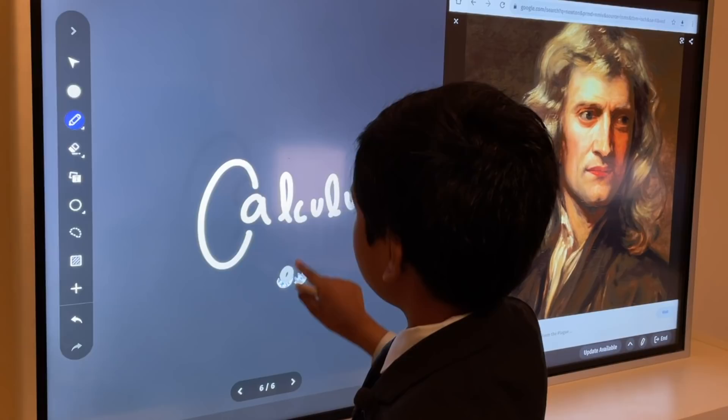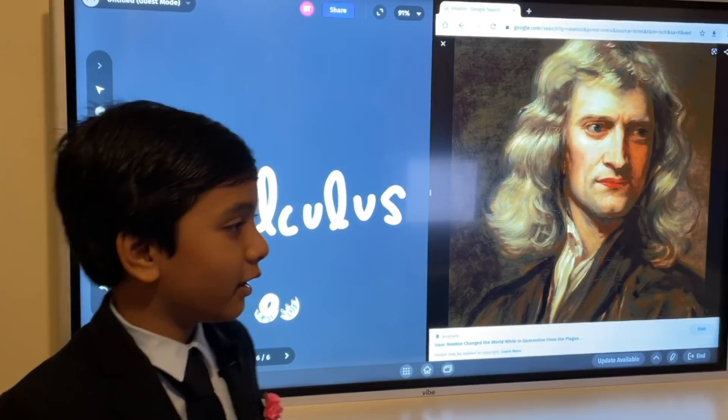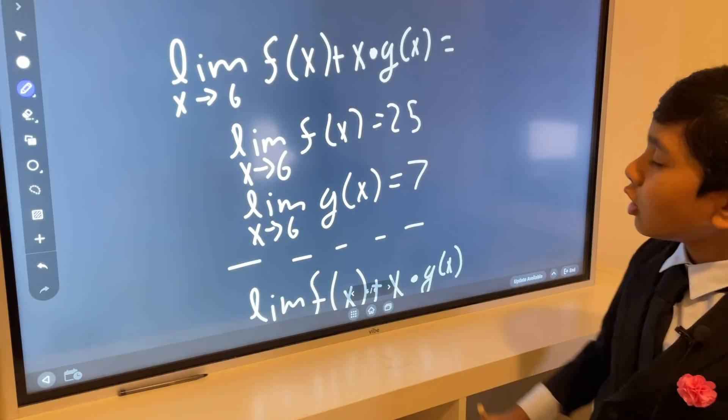This is calculus, and by clicking on this video, you are obligated to learn with me, and I am obligated to teach you. Now let us thank Sir Isaac Newton for inventing this beautiful subject, and let us begin with our exit slip. We want to find the limit as x approaches 6 of f(x) plus x times g(x).